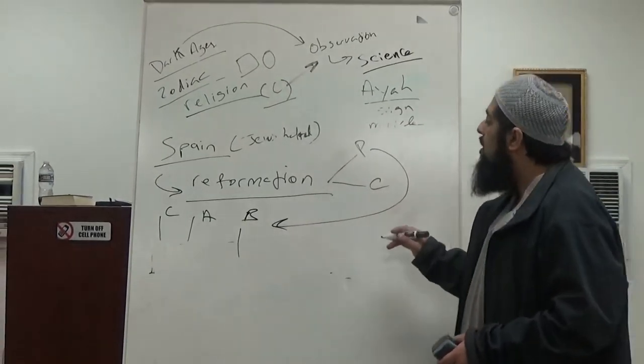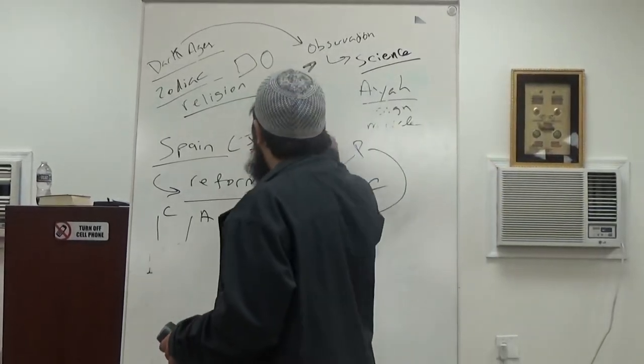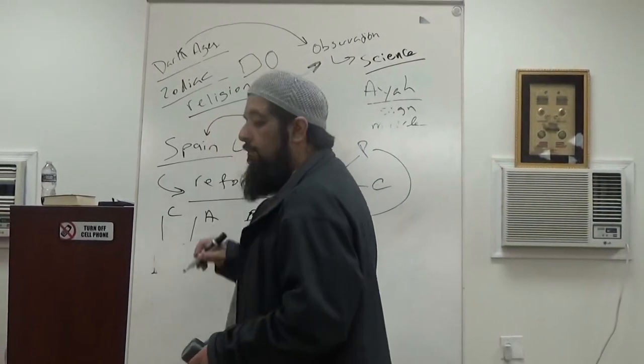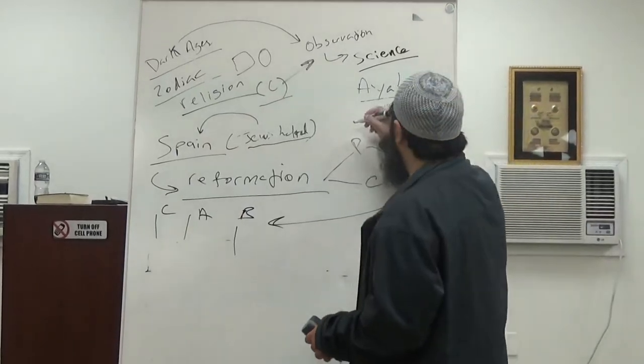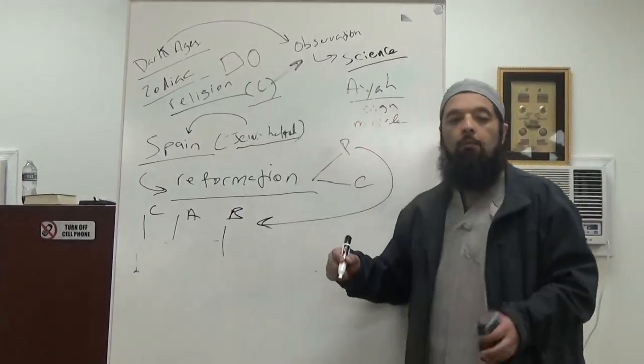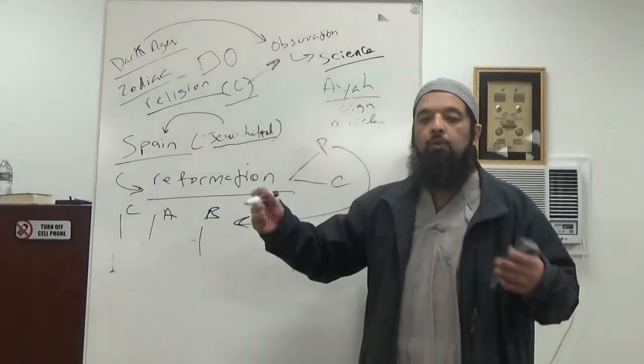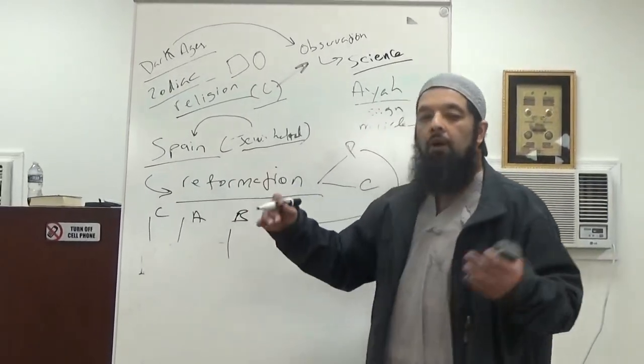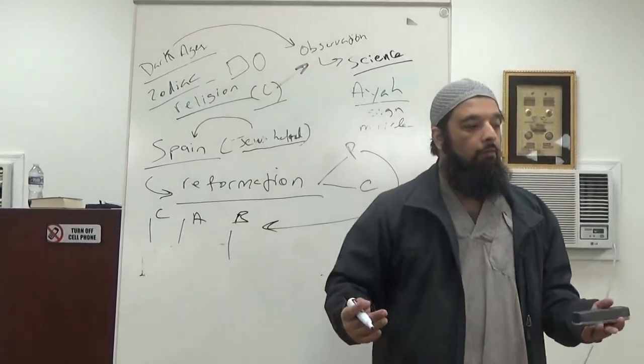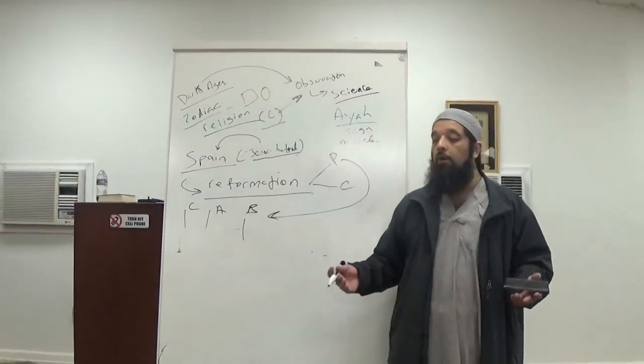just as Jews helped Muslims come into Spain, the Jewish people also helped. Like for example, Calvin, if you study Martin Luther and then Calvin and the influence Calvin had from the Jewish people, because in the Muslim universities, a lot of the professors were Jews.